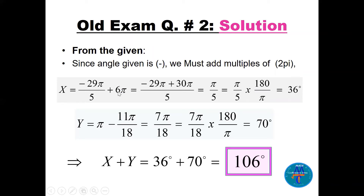Finding the LCD of 5 and multiplying by 6 gives 30π. With -29π, you get π/5 as the first positive angle between 0 and 2π. Converting π/5 to degrees: multiply by 180/π to get 36 degrees, so X equals 36°. For capital Y, the supplementary angle is π minus 11π/18. That gives 18π minus 11π over 18, which is 7π/18. Converting to degrees: multiply by 180/π to get 70°. Therefore, x plus y equals 36 plus 70, which is 106 degrees.